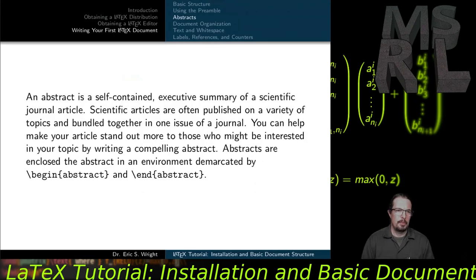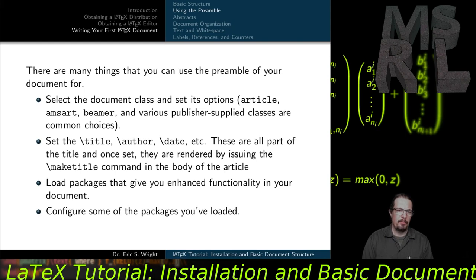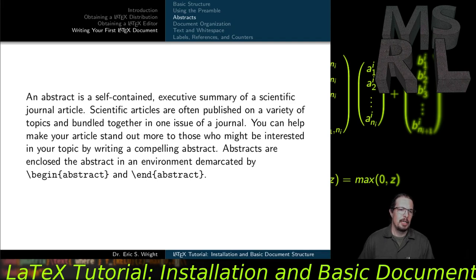To summarize what we've done: we've added front matter to our document — the title, the author, the date. We've rendered that front matter into the document by issuing the maketitle command in the body of the article. We loaded a few packages that we haven't really used yet. We haven't needed to configure any of those, but we'll see examples of how that might happen in the preamble later on. And then we created a very short abstract.